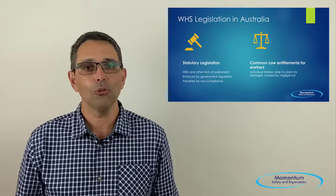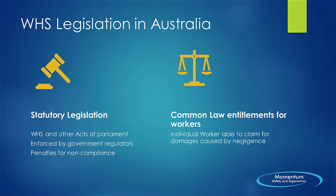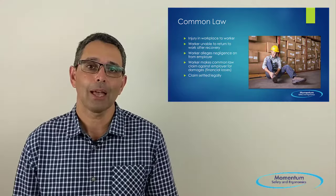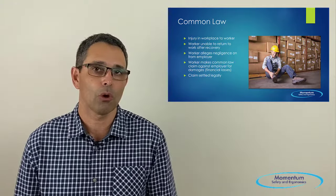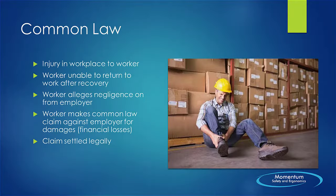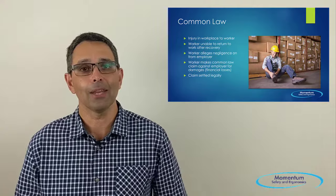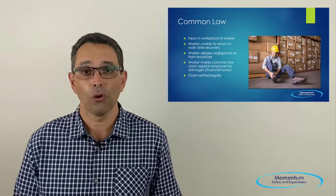In Australia we have two different types of legal systems. We have statutory law, which includes our acts and regulations, and we have common law, which is the worker's entitlement to make claims against their employer for perceived negligence. Common law applies when an injury has been sustained and the worker has been unable to return to work in their previous capacity. Generally through the worker's compensation system, they will make a claim against their employer for perceived negligence — which may present itself as a lack of appropriate systems or an unsafe workplace, for example a slippery floor. That claim will be settled legally either in or out of court, and either in favour of the worker or not.